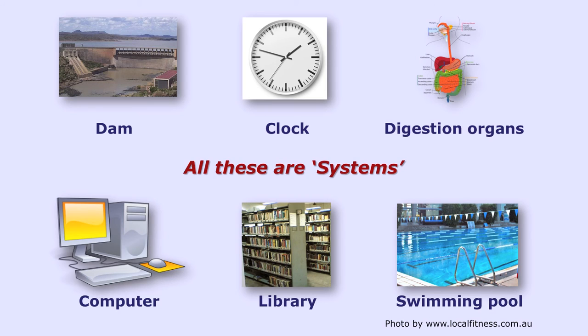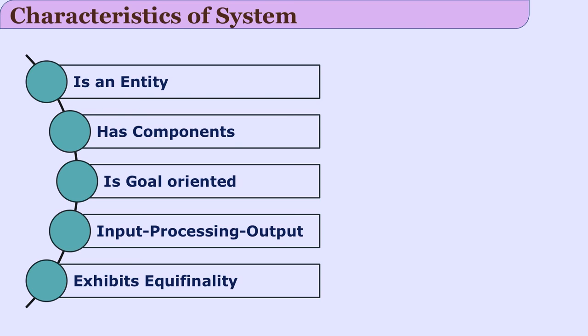They all are systems. They all have some parts, and they all function towards some goals. Let us see these characteristics once again. A system is an entity. A system has components. A system is goal oriented. Input-processing-output happens in any system. And a system exhibits equifinality. Some of you might be stuck at the term equifinality — what is equifinality?